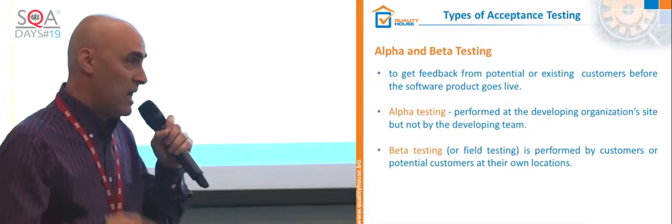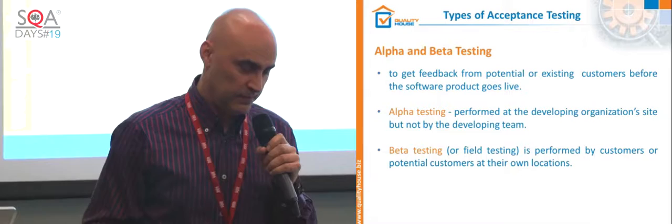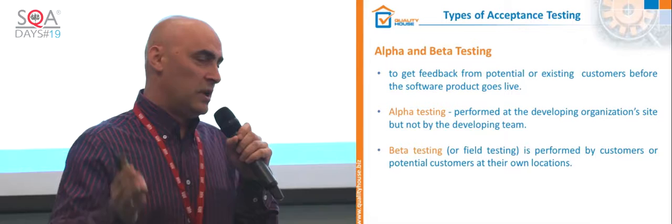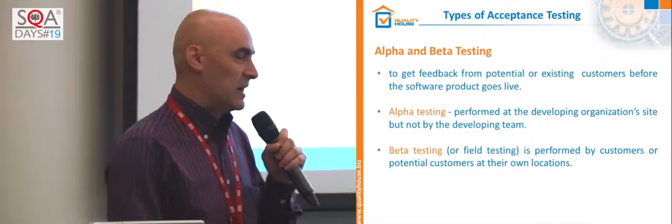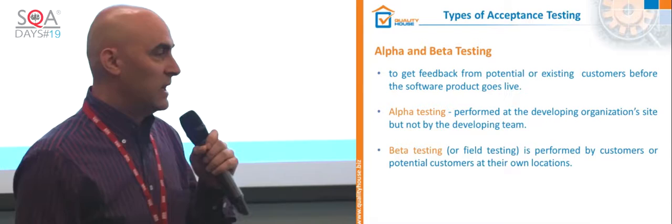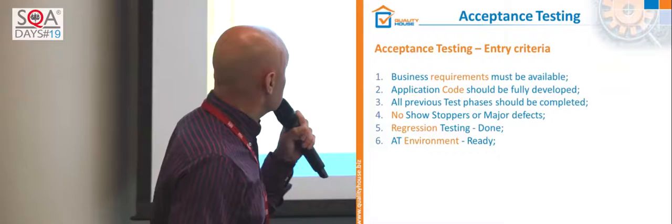Beta testing is mainly done internally in the organization, but not by the development team. Usually you release a beta version of the application online and ask your potential or existing customers — say 100 to 2,000 people — to use it and collect feedback over a period of two weeks or two months. It's also a certain type of acceptance testing.